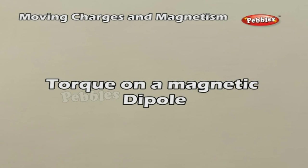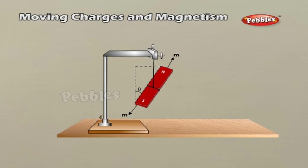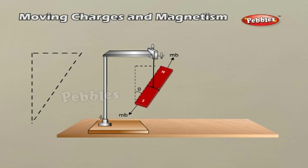Torque on a magnetic dipole. Consider a magnetic dipole of length 2L placed in a uniform magnetic field. Let M be the pole strength of each pole. Let the magnetic dipole moment vector M make an angle θ with the direction of magnetic field vector B. If F is the magnitude of the force acting on each pole, then F equals M·B. The two forces constitute a couple — equal in magnitude, opposite in direction, with different lines of action. If τ is the moment of the couple, then τ equals F·NT, as shown in the equation above.